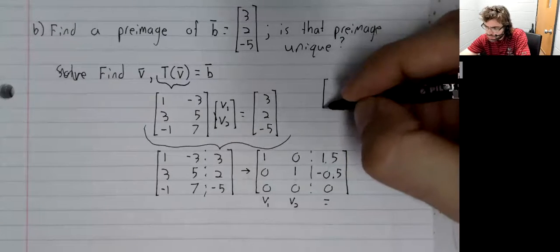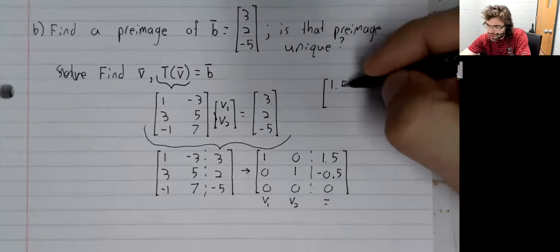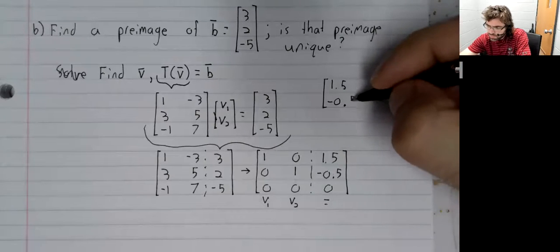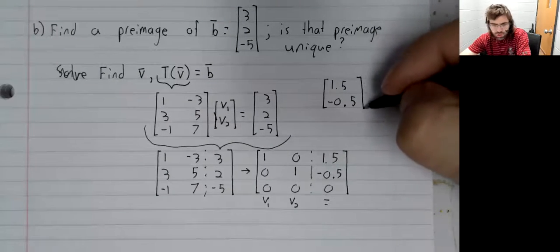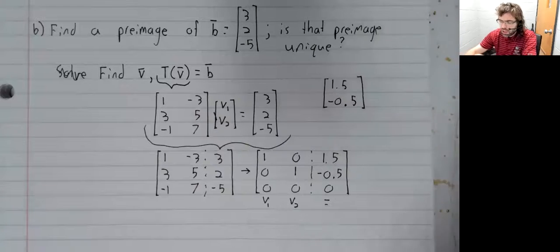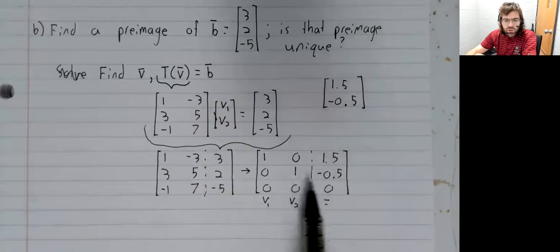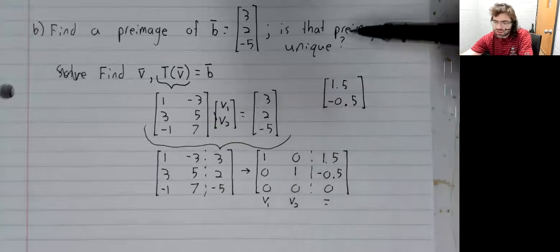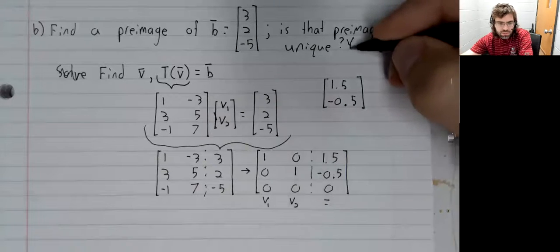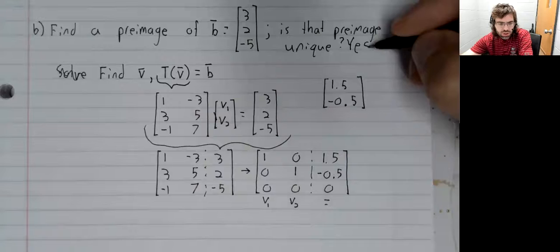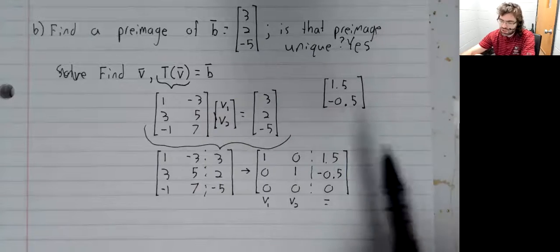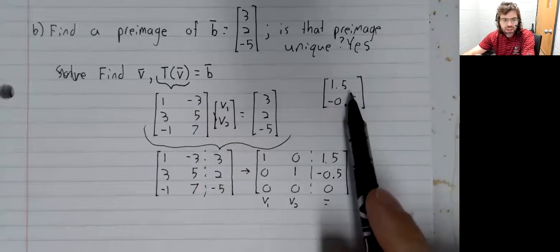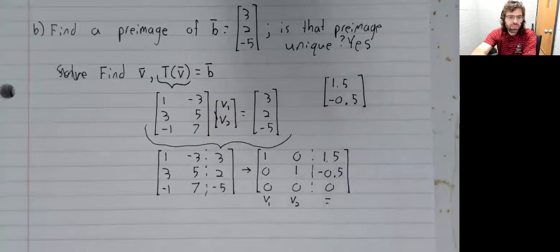We can read off: v₁ is 1.5, v₂ is -0.5. So here is our solution. We see that there's only this single solution, so this pre-image is unique. This is the only vector that fits the bill.